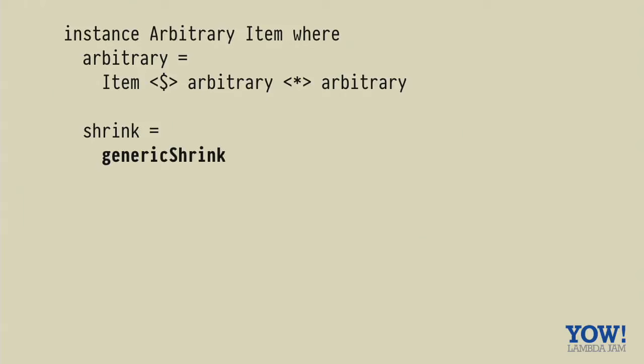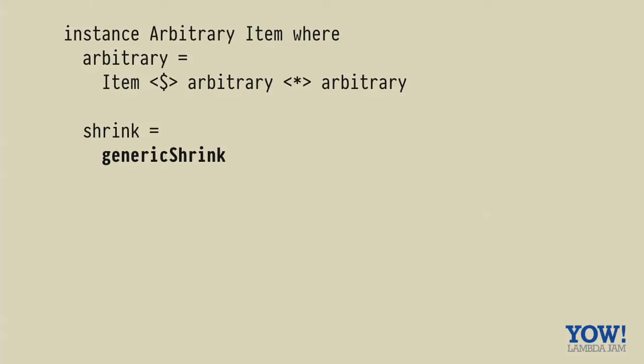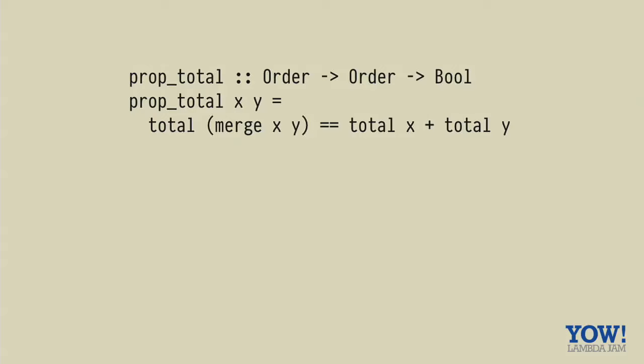For item, we can use this thing called generic shrink, which uses GHC generics to automatically provide a shrink function, which will just shrink the subterms and we can do the same for order. So now when we come back and run our property, we get a much nicer counter example and you can see that it's shrunk to at all. So probably the name doesn't really matter that much. And we see that the price is 51 US dollars. So the fact that it was exactly 51, it tells you something about why it's failing. So I think that's really cool.